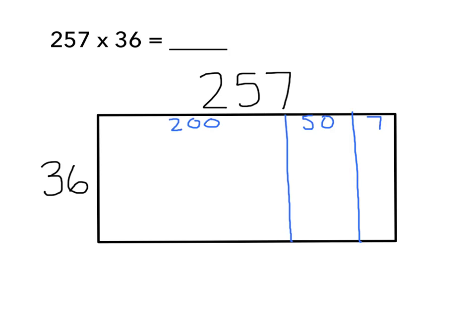The next thing that I want to do is do the same thing for 36, and I like to break it down by place value. So the 3 in 36 is in the tens place. So that represents 30, and I'll label it that way. And the 6 is in the ones place, and that represents 6.